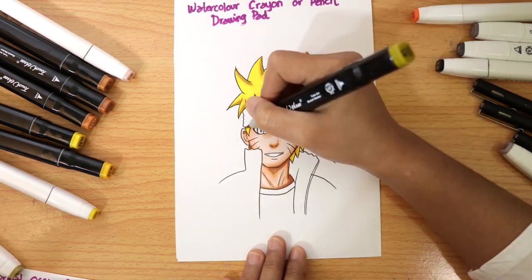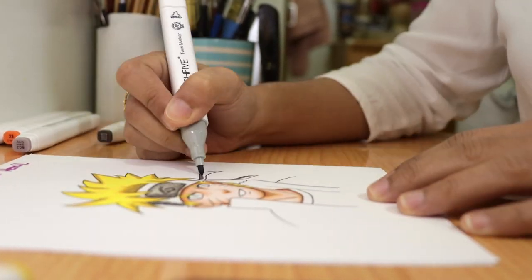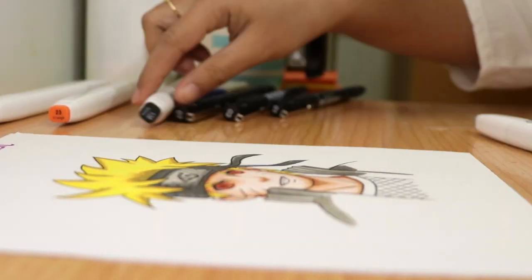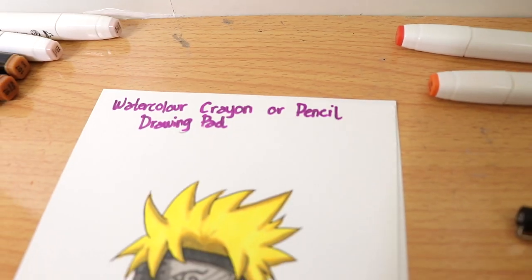As you can see this watercolor paper is not working properly with the markers because it's too thick to absorb ink that causes smudge.